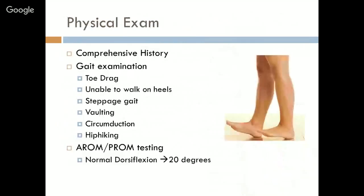On physical exam, a comprehensive history is needed to identify the cause of foot drop. During gait examination, toe drag is visible. Patients are unable to walk on their heels. Compensatory techniques — steppage gait, vaulting, circumduction, and hip hiking — may be observed. On range of motion testing, patients may not have normal dorsiflexion range, which is 20 degrees.